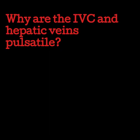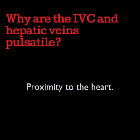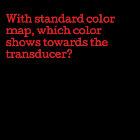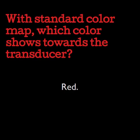Why are the IVC and hepatic veins pulsatile? Their proximity to the heart. The hepatic veins are the last veins to drain before the IVC enters into the right atrium, so the pulsatility in this area is directly related to the pumping of the heart. With standard color map, which color shows towards the transducer? Red. Red should be assigned towards the transducer and blue should be assigned away from the transducer.